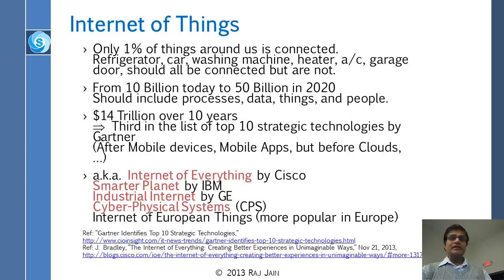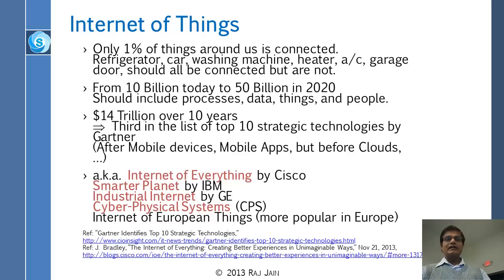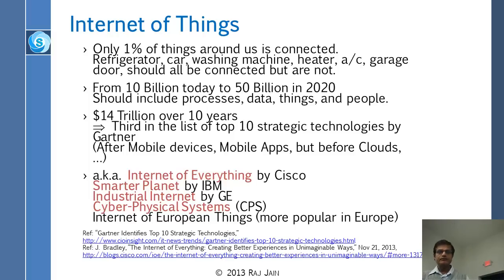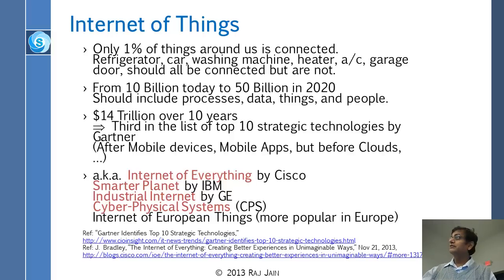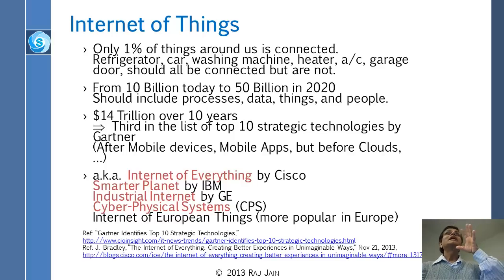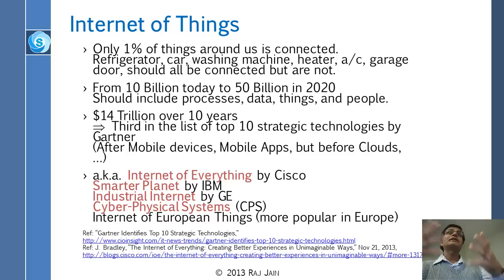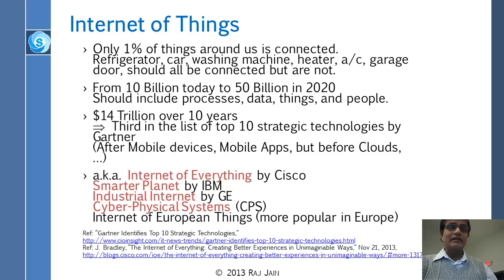That includes your refrigerator, car, washing machine, heater, air conditioner, garage door — many of these are already connected. From 10 billion devices today to 50 billion in 2020 — that's the projection — including processors, data things, and people. Cisco projects a 14 trillion dollar business over 10 years, spanning machine-to-machine communications for companies like GE, hospitals with medical devices, and anyone connecting things to the internet.